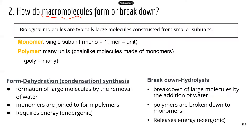Here are some definitions. "Mono" means one — a single subunit — and monomers are the building blocks for polymers. "Poly" means many, so polymers are large molecules with many repeated subunits linked together. When you want to build polymers and macromolecules, the chemical reaction you use is dehydration synthesis, also called condensation synthesis.